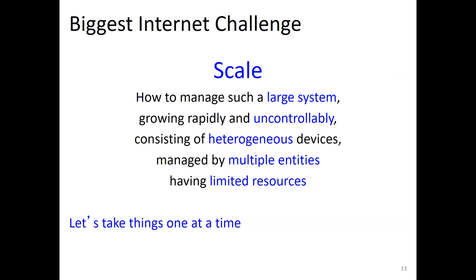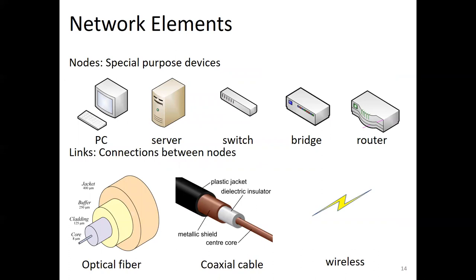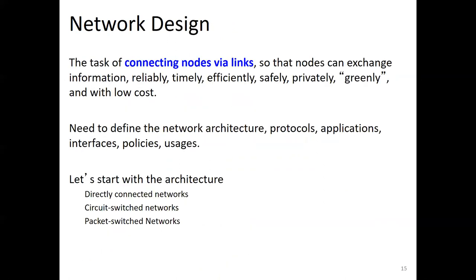Now let's take all the things one at a time. Network elements include personal computers, servers, switches, bridges, and routers. The connections between these nodes can be optical fiber, coaxial cable, and wireless. The task of network design is connecting nodes via links so that nodes can exchange information reliably, timely, efficiently, safely, privately, cleanly, and with low cost.